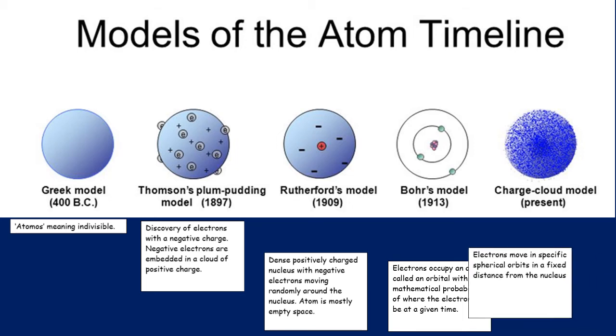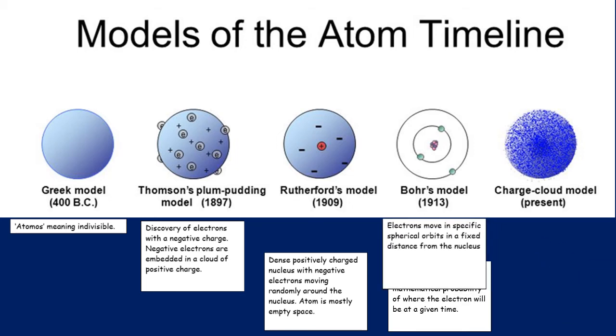Again, not long after, and this is kind of where you got to at GCSE, that electrons actually are found in specific spherical orbits in a fixed distance. So whereas Rutherford didn't have them in a fixed distance or in orbits, Bohr's model does have them in fixed distances from the nucleus.